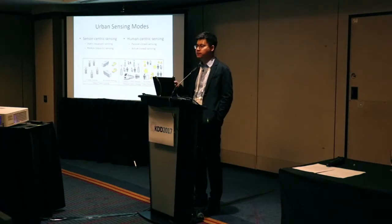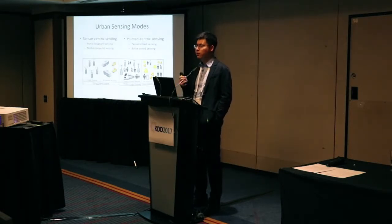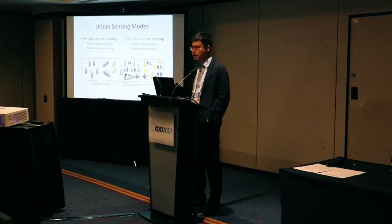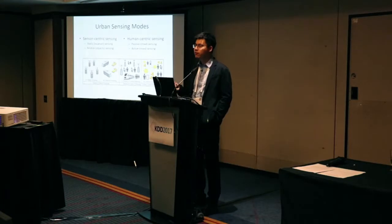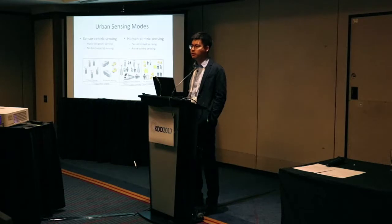There are two sub-categories in human-centric sensing: passive crowd sensing and active crowd sensing. In passive crowd sensing, people have no idea they are contributing data, no idea what the purpose of data collection is, and don't know when or how they've been participating. For example, when we make a phone call, that data can be used to improve quality of service in wireless communication networks, but people have no idea their data has been used.